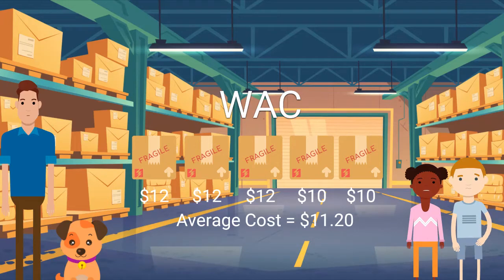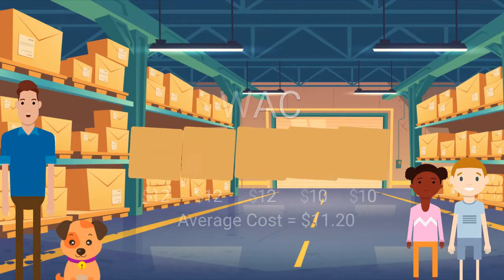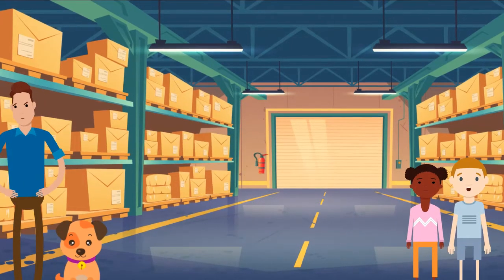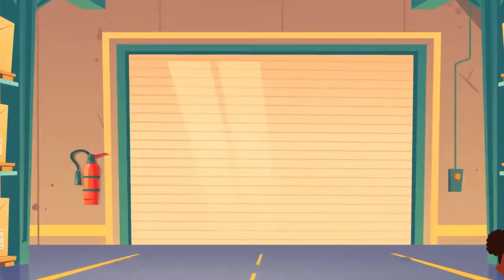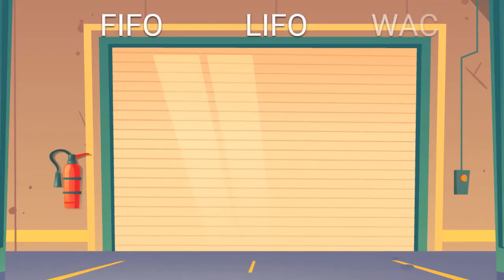And each time you purchase new inventory, you just re-weigh the average cost? Yep, that's correct. Let's do an example across all three at the same time. Let's set them up with FIFO on the left, LIFO in the middle, and WAC on the right.